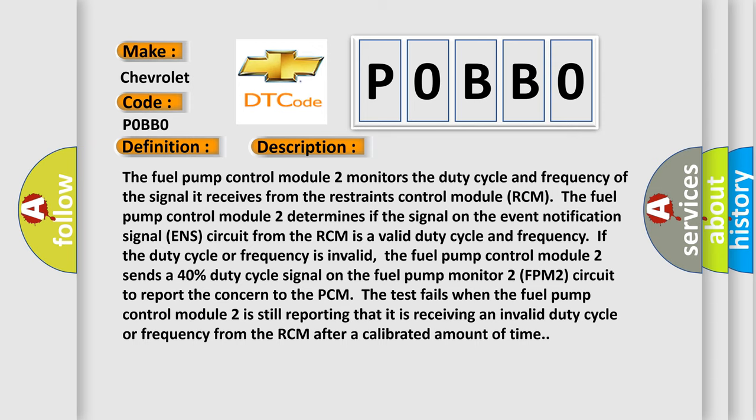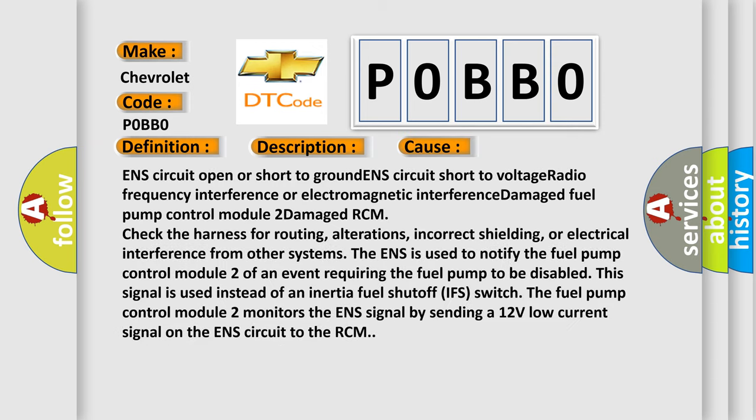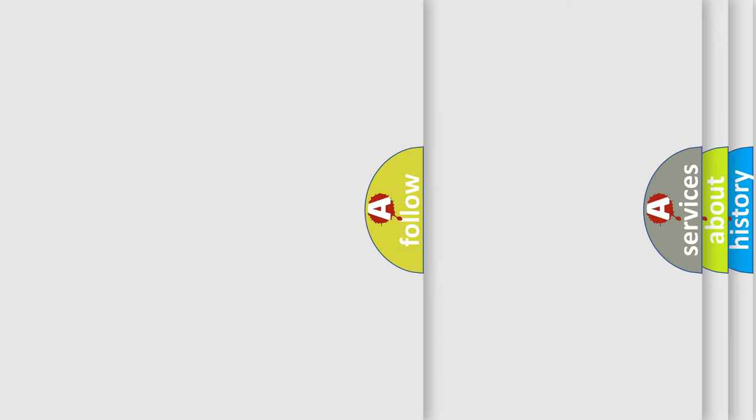This diagnostic error occurs most often in these cases: ENS circuit open or short to ground, ENS circuit short to voltage, radio frequency interference or electromagnetic interference damage, fuel pump control module 2 damage, or RCM damage. Check the harness for routing, alterations, incorrect shielding, or electrical interference from other systems. The ENS is used to notify the fuel pump control module 2 of an event requiring the fuel pump to be disabled. This signal is used instead of an inertia fuel shutoff switch. The fuel pump control module 2 monitors the ENS signal by sending a 12-volt low-current signal on the ENS circuit to the RCM. The airbag reset website aims to provide information in 52 languages.